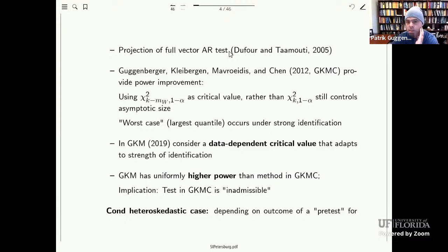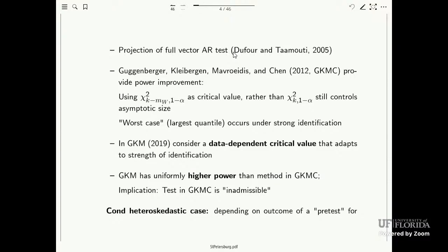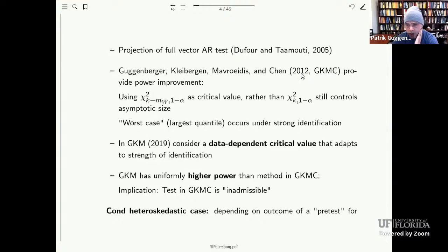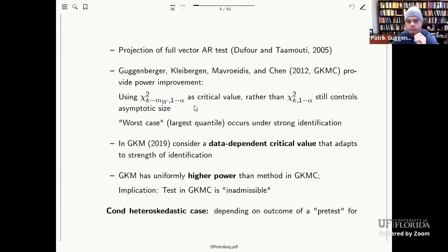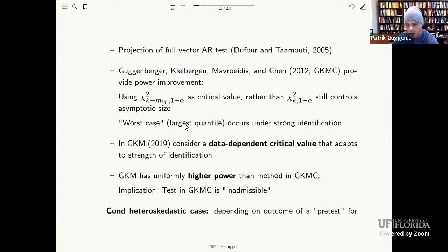Then in a 2012 Econometrica paper, we showed there is a Pareto improvement: you can use chi-squared critical values with k minus MW degrees of freedom—where MW is the dimension of the structural parameter vector not under test—and still control the asymptotic size. Interestingly, the worst case where the largest quantiles occur is under strong identification, which suggests that data-dependent critical values adjusting to the strength of identification could improve power further.